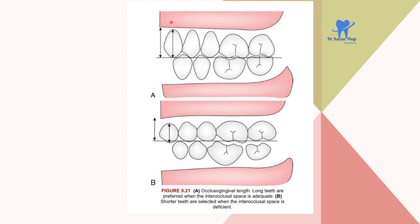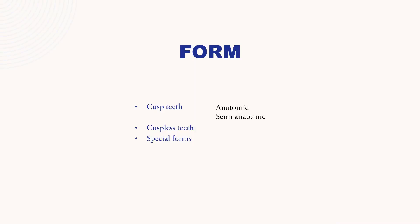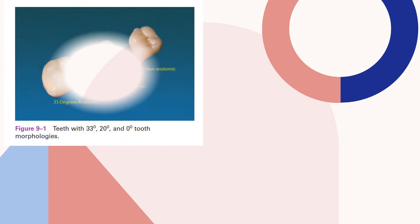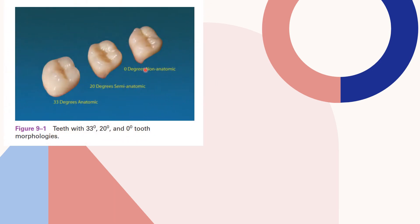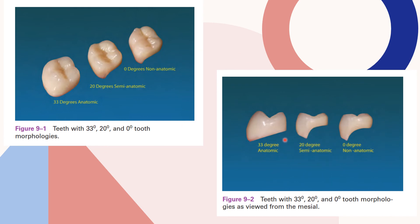Long teeth are preferred when the interocclusal space is adequate; short teeth are preferred when the interocclusal space is deficient. Regarding form of the teeth, the factors are cusp teeth that is anatomic, semi-anatomic, cuspless teeth, and special forms. These correspond to 33-degree anatomic, 20-degree semi-anatomic, and 0-degree non-anatomic tooth morphology, as viewed from the mesial.